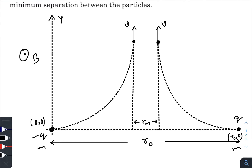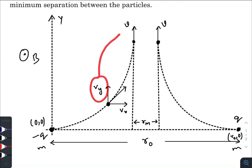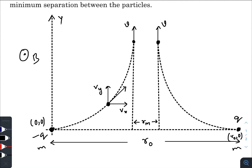Let us take the situation of any one charge — I am taking this negative charge here. At this instant its velocity will be in this direction, so it will have two components of velocity: vx and vy. In the situation of minimum separation, only vy will be present, equal to v, and vx will turn out to be zero.